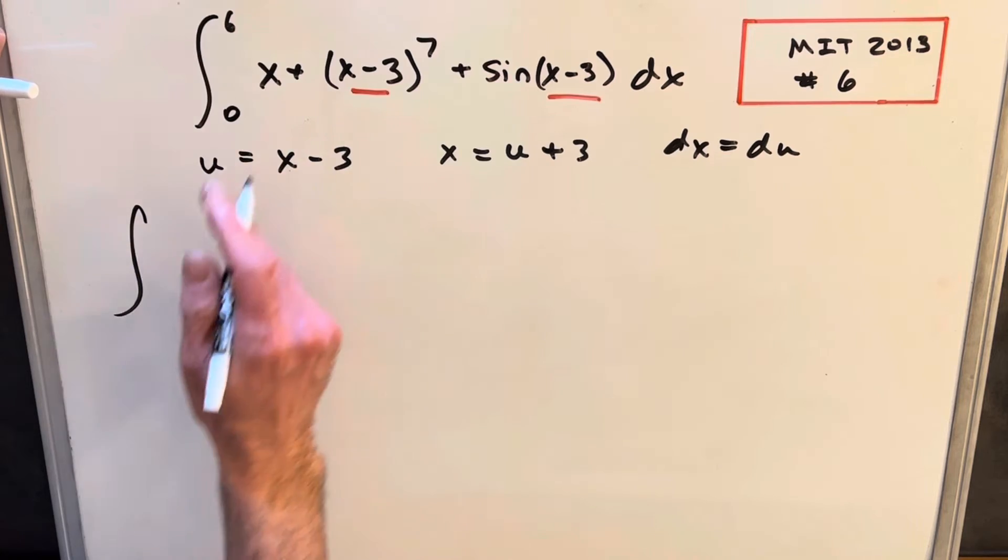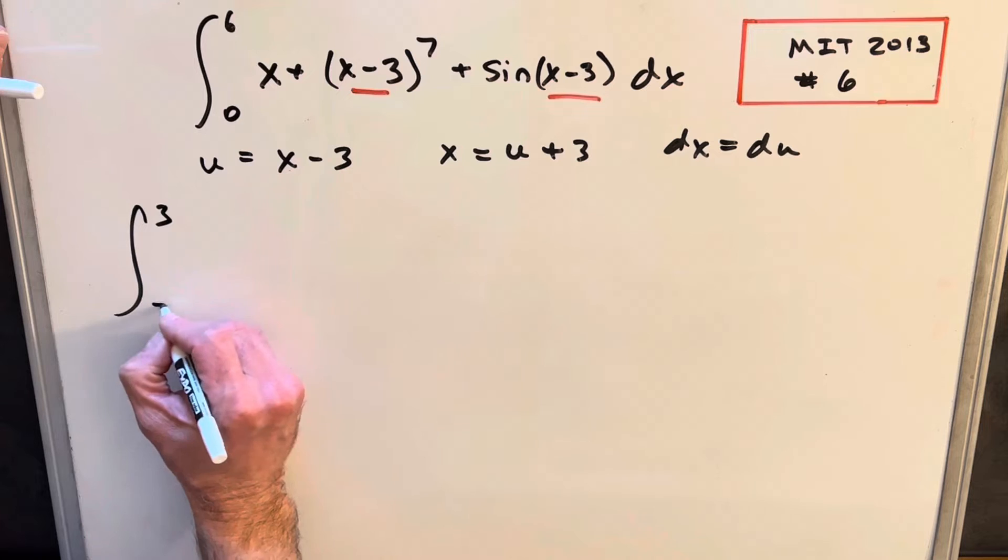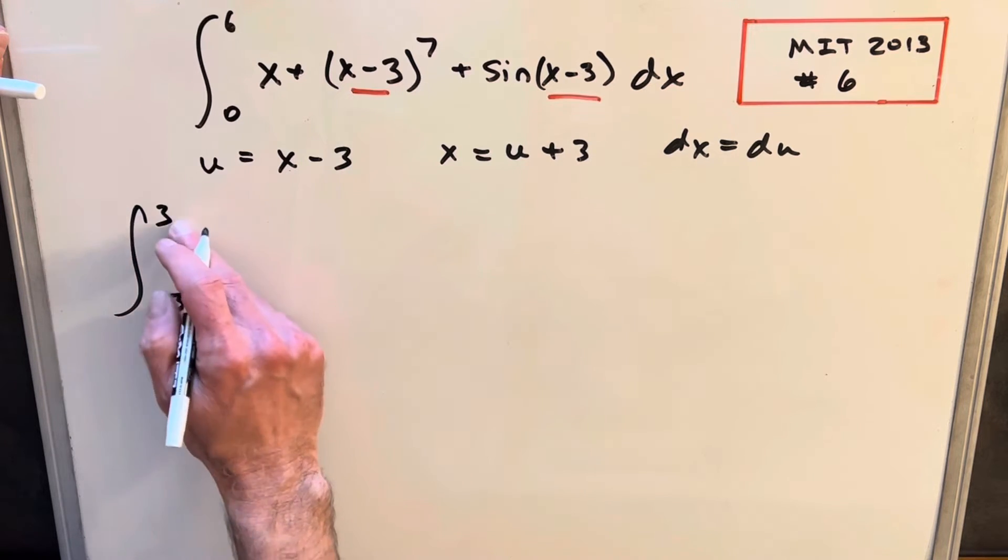And then let's make this substitution. So we'll plug a 6 in here, and we're going to have a 3 on top. And then we'll plug a 0 in, and we'll have a minus 3. Interesting, right?